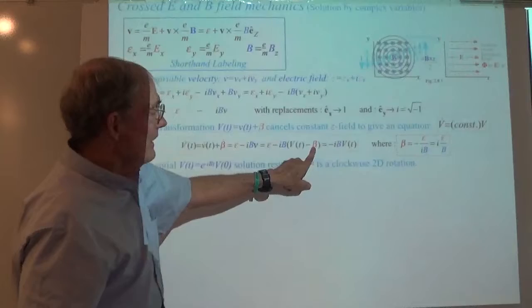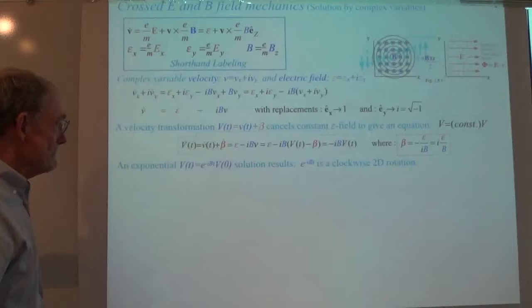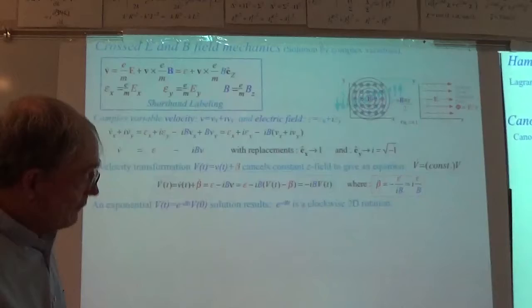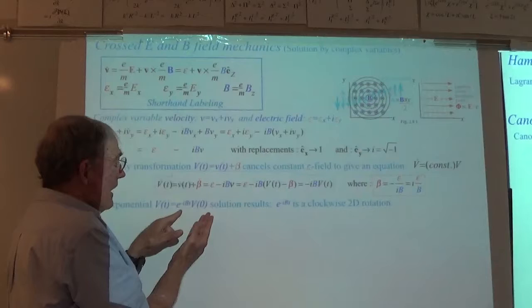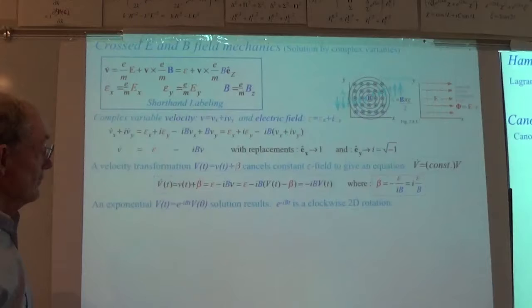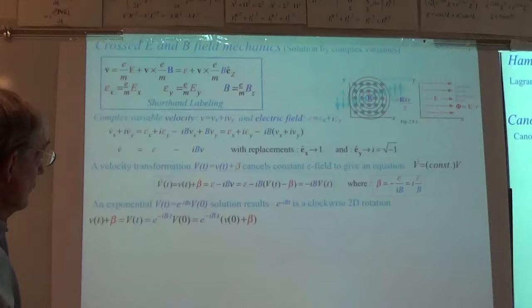The epsilon cancels and you're left with your final set. The idea was to get a simple exponential solution. Basically what this is doing is taking your initial velocity and rotating it at a rate b·t. That's the cyclotron motion, exposed in a very simple equation. So that's what big V does — and big V is little v plus beta.